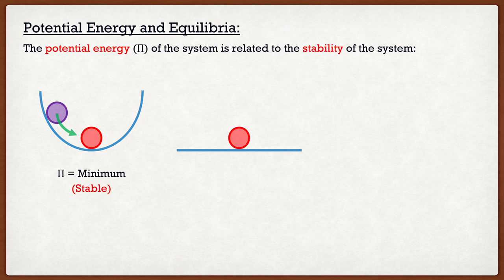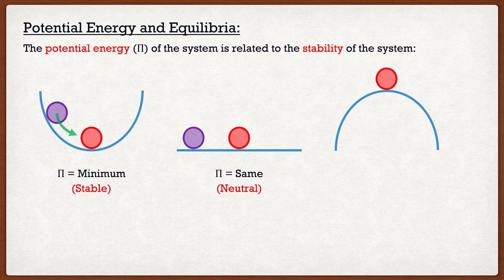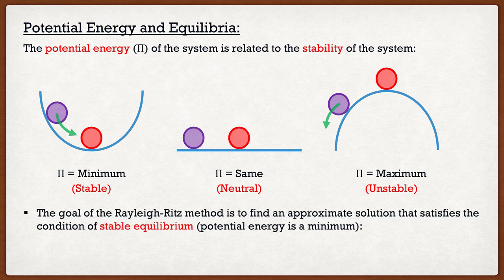Our second case: instead of a tube, let's say we had a flat surface with our ball. If I move it a little bit to the left and release it, nothing happens — the ball won't move, it stays in a new equilibrium form. We say the potential energy is actually constant, and we call this neutral equilibrium. For our final case, we take the ball and put it on the outside of a tube. If I move it a little bit to the left, the ball is simply going to roll off. In this case, our potential energy is maximum and this leads to unstable equilibrium.